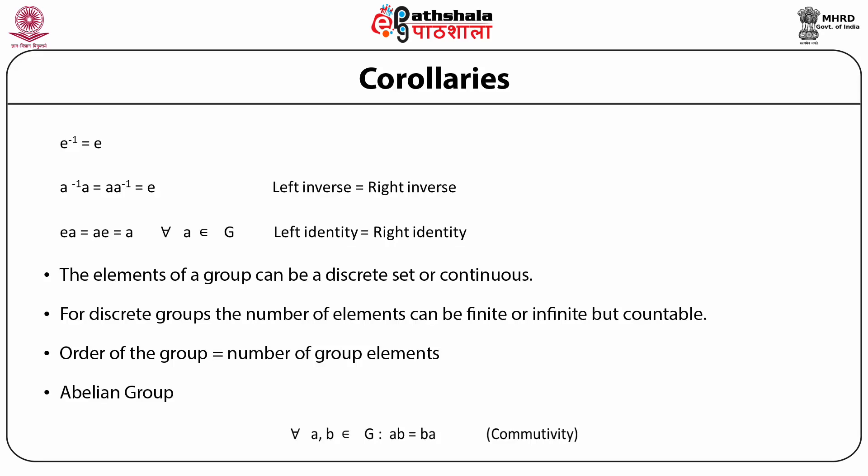Likewise, it is easy to see that the left inverse equals the right inverse. If A inverse multiplies A on the left, it is also equal to A inverse multiplying A on the right. And A inverse · A equals the identity element E. Thus we have a unique identity, and an element can be multiplied by its inverse either on the left or the right, giving the identity element.